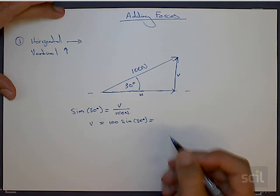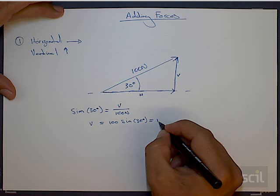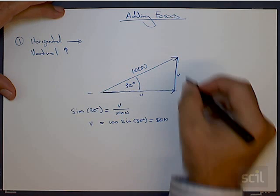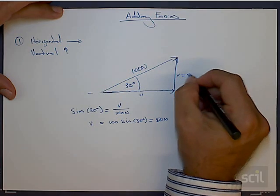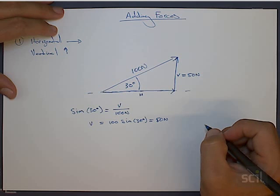And if you get your calculator out, you realize sine of 30 is 0.5, which means that the vertical component of this force is only 50 newtons. So the vertical component is 50 newtons. So this force is moving upwards, 50 newtons.